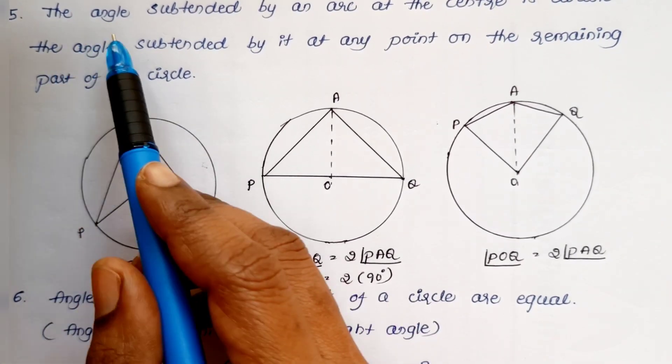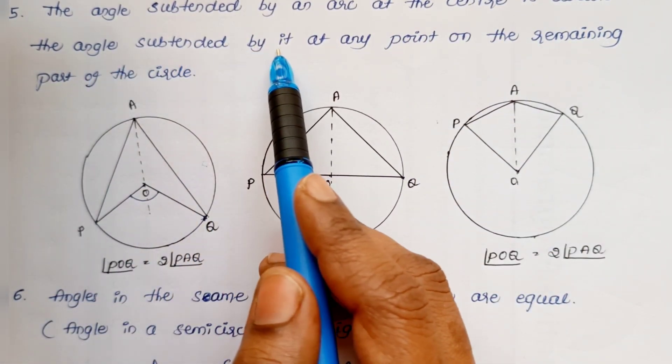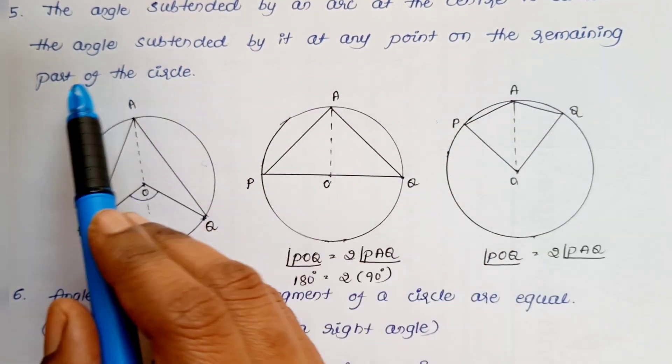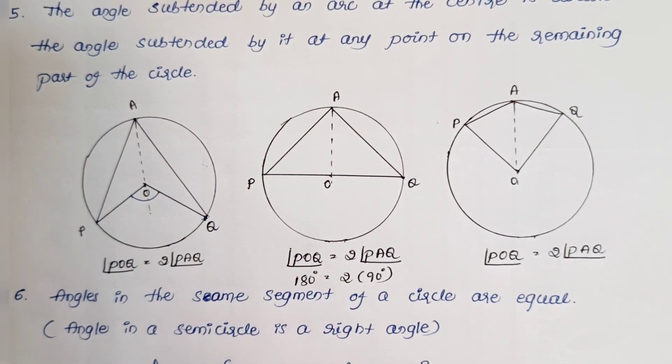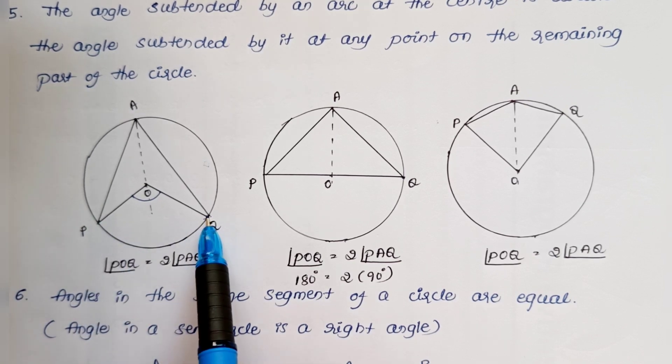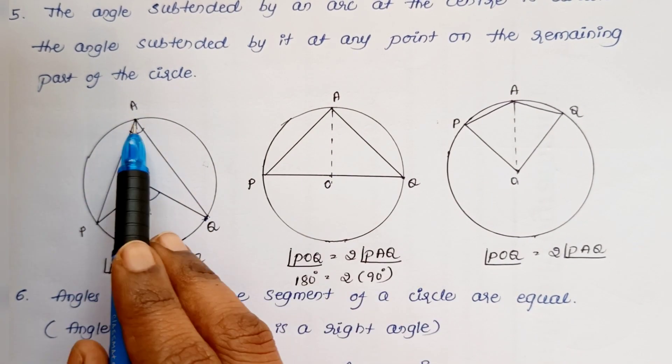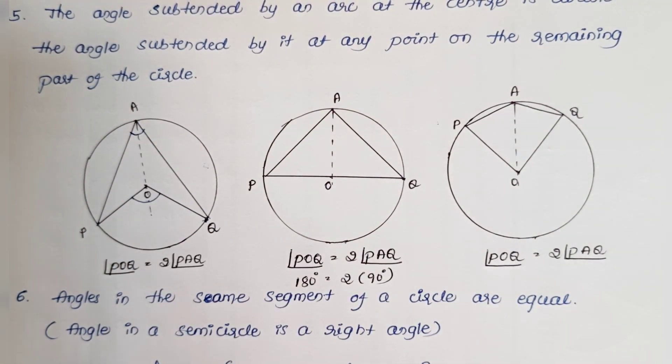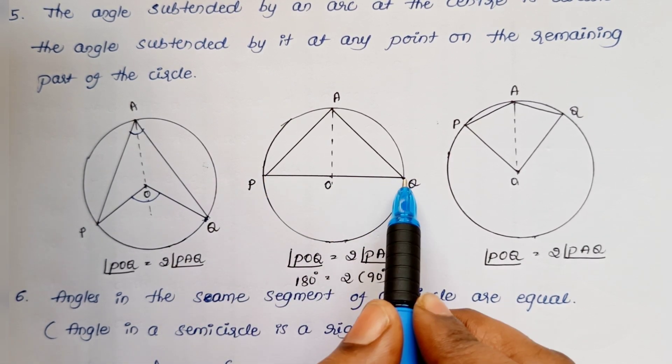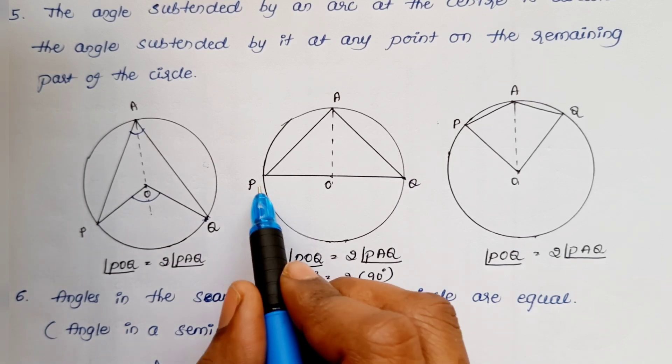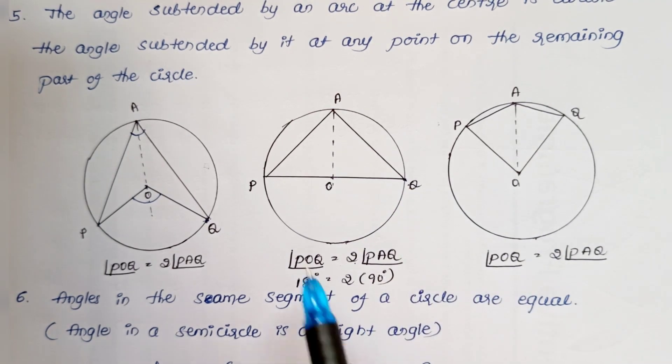Next theorem is: the angle subtended by an arc at the center is double the angle subtended by it at any point on the remaining part of the circle. In all three cases it is true. First one is minor arc. So this angle is twice the angle at this point. Next, the chord is a diameter, so a semicircle forms. Here also angle POQ is equal to twice of PAQ.